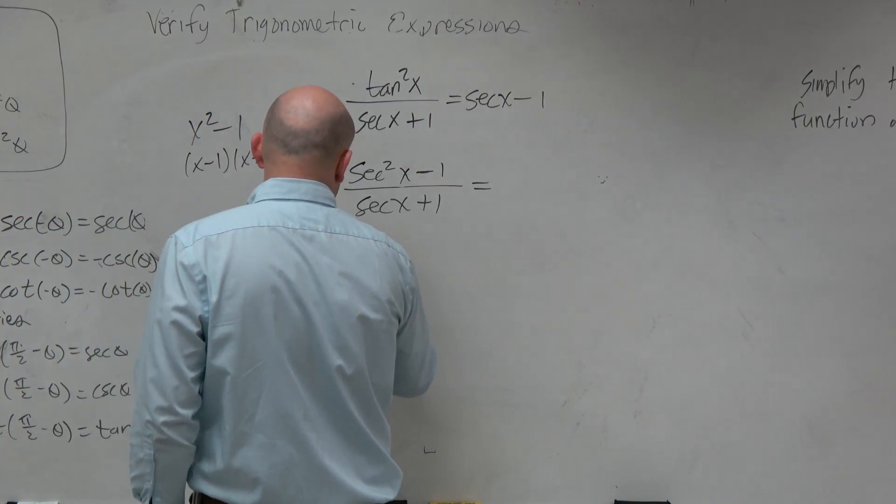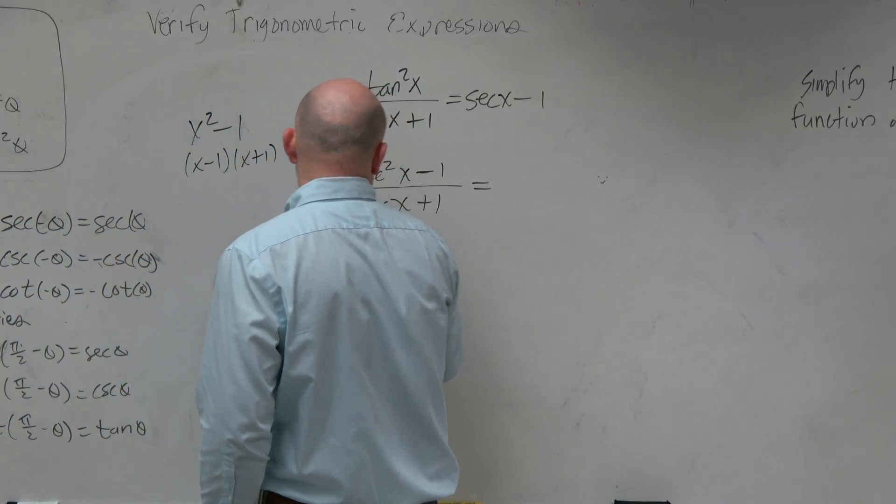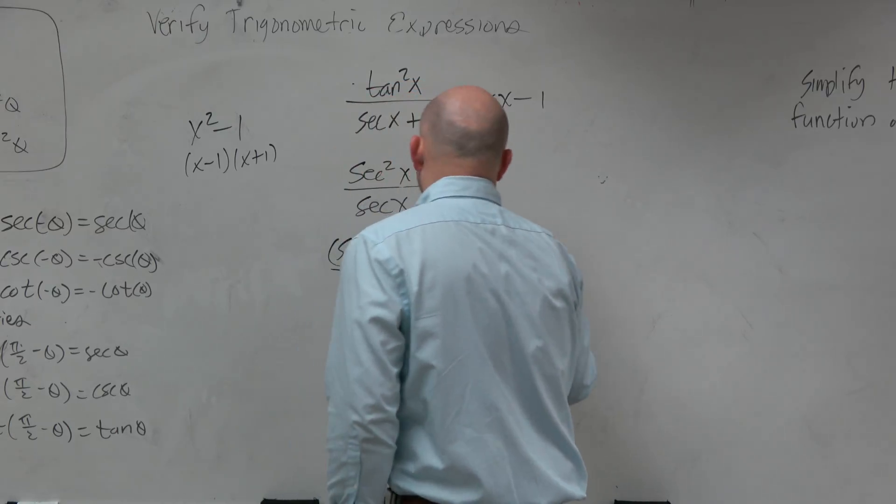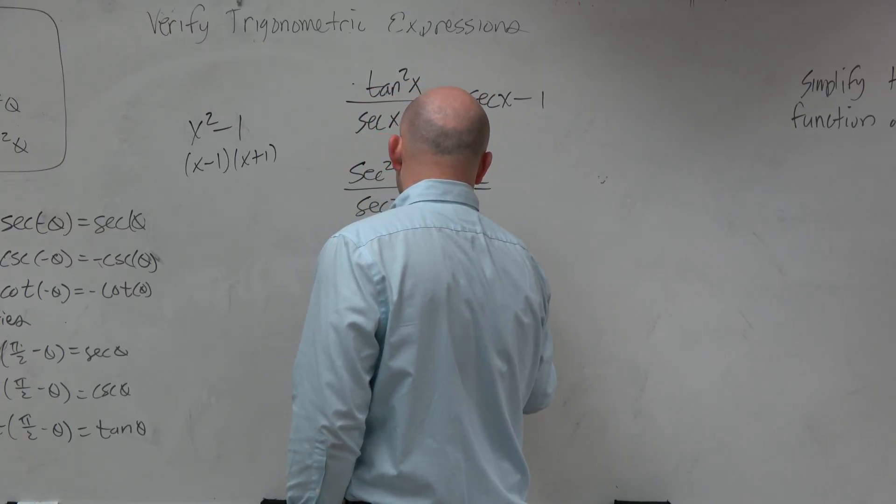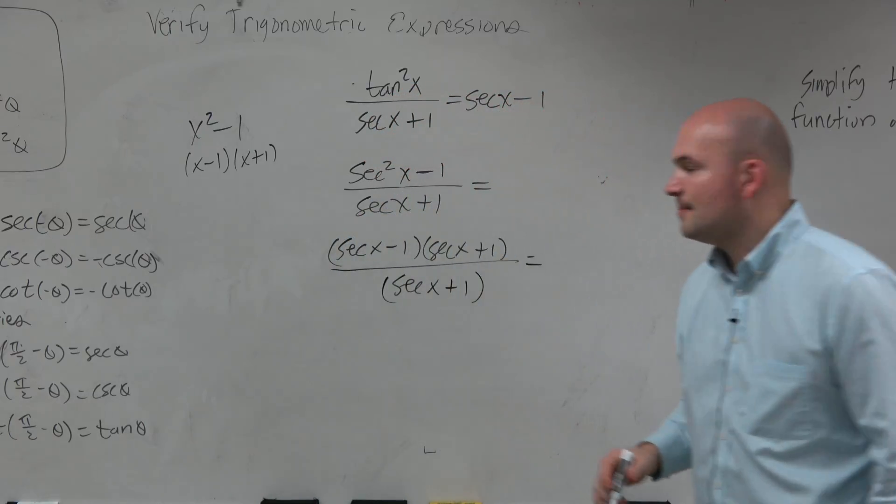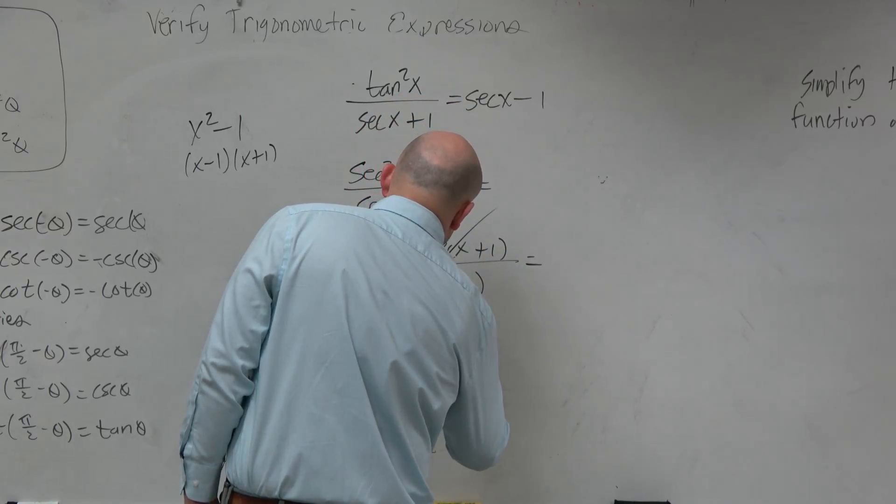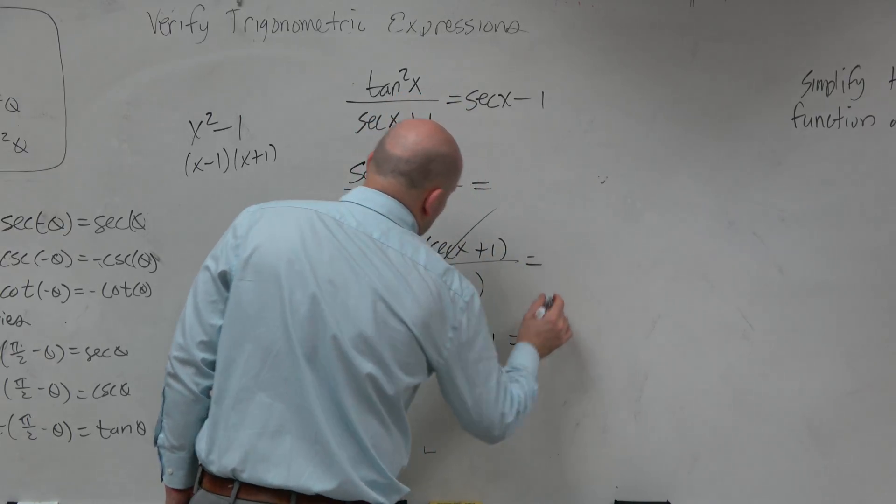Oh, so in this case, why don't I do this? Secant of x minus 1 times secant of x plus 1, all over secant of x plus 1, and then secant of x minus 1 is verified.